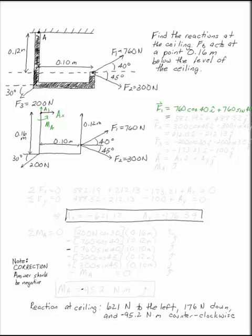F1 is 760 cosine 40 which is 582.19 in the i direction and 760 sine 40 which is 488.52 in the j direction. Do the same thing for F2.